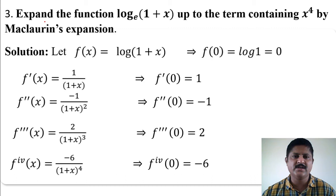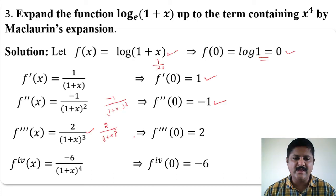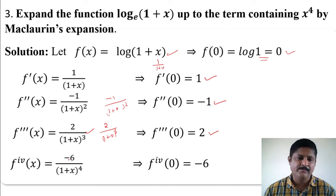Again differentiate f'(x), we get f''(x) equals minus 1 divided by (1 + x) squared. Putting x equals 0, we get minus 1 divided by (1 + 0) squared, which equals minus 1. Therefore f''(0) equals minus 1. Differentiating again, f'''(x) gives 2 divided by (1 + x) cubed, and at x equals 0 we get 2 divided by 1, which is 2.